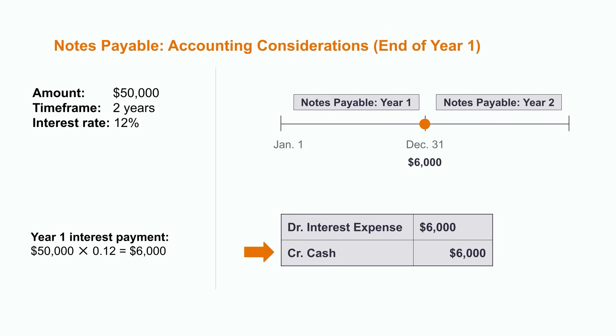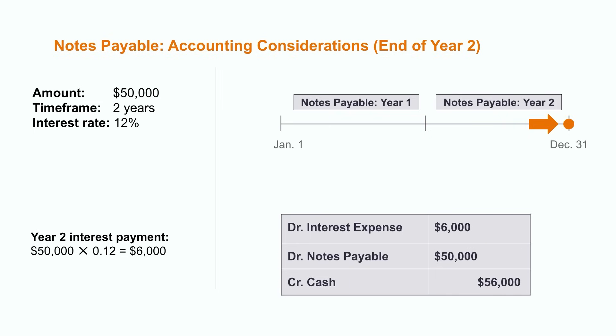This would result in an increase to our interest expense and a decrease to the cash account of $6,000. Lastly, we fast forward to the end of year two. At this point, not only do we have to pay another $6,000 to cover the interest for year two, but it's also time to pay back the original $50,000 loan. We would do this by clearing out the notes payable balance by $50,000 since we no longer owe that money, and then decrease the cash balance to reflect that the money has been paid back to the bank. That sums up the key accounting transactions that would take place over this two-year timeframe.